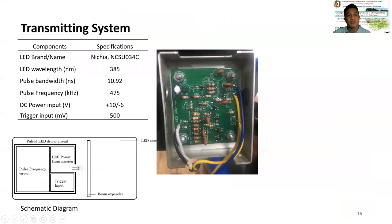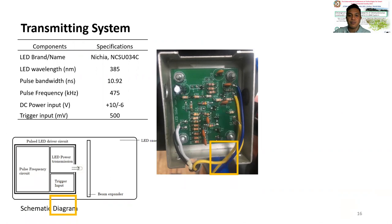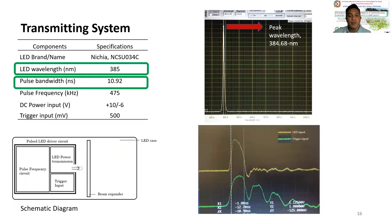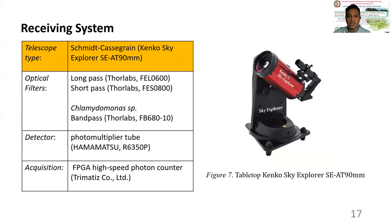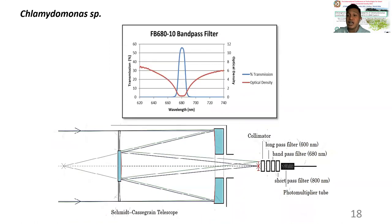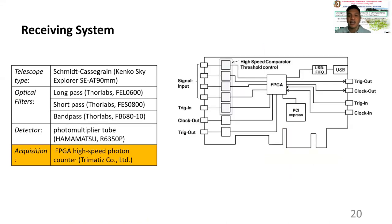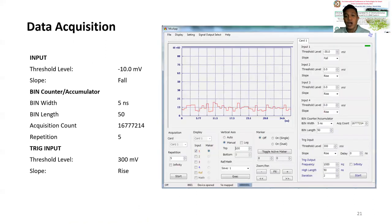The transmitting system of the LiDAR consists of a 385 nm LED, NICHIA brand, with a pulse frequency circuit. This is the trigger input and the LED transmission system, measured at approximately 385 nanometers plus or minus, with a pulse width of 10.92 nanoseconds. The receiving system is a revised Schmidt-Cassegrain telescope with an optical filter at 680 nm for fluorescence emission, a photomultiplier tube detector, and an FPGA-based photon counter board.